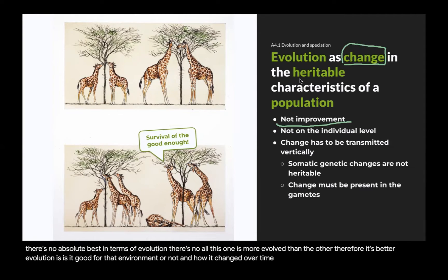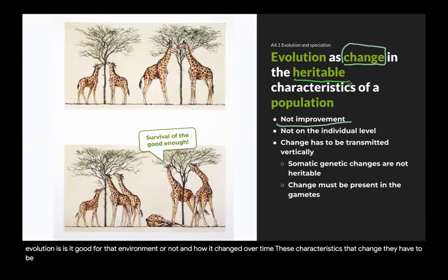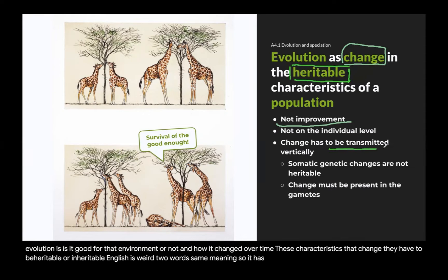These characteristics that change have to be heritable — also called inheritable, two words with the same meaning. They have to be transmitted vertically from parents to offspring.